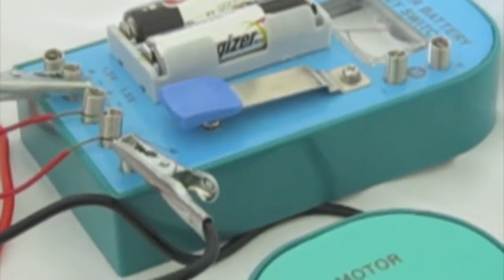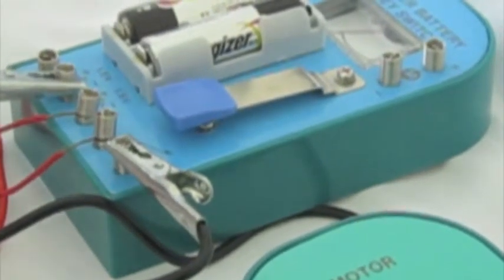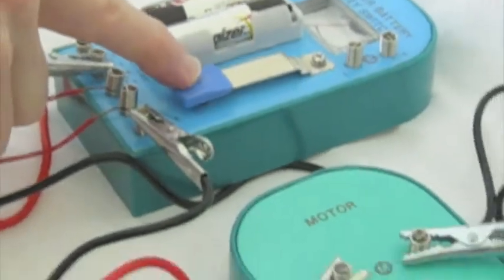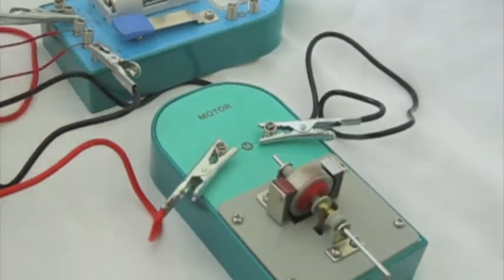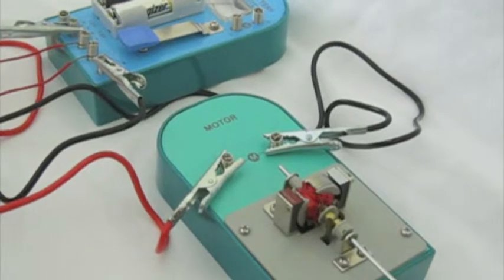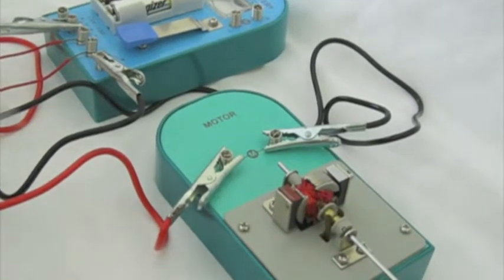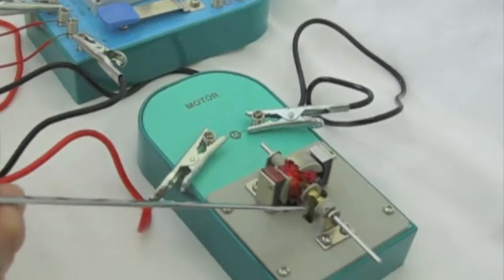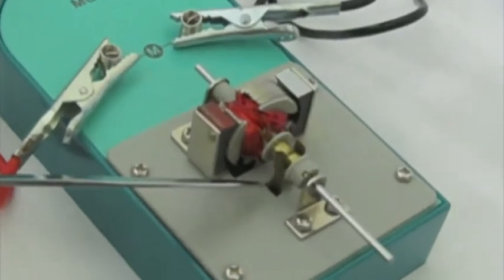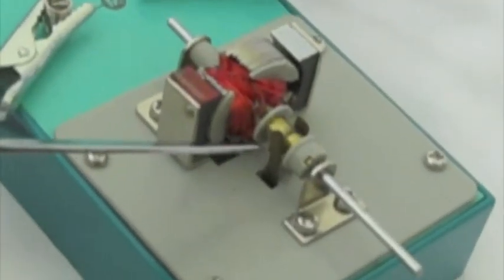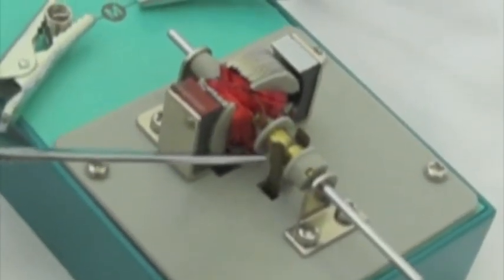Once the switch is pressed, the power source sets up a circuit where the electrons move through the wires to the brushes. The electricity comes to the brushes, and then the brushes bring the electricity into the commutator.